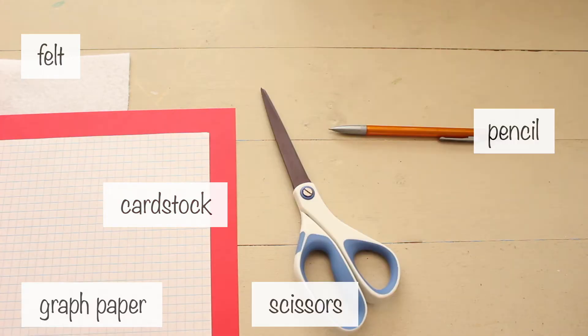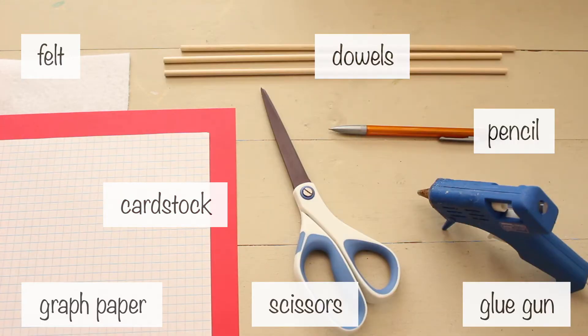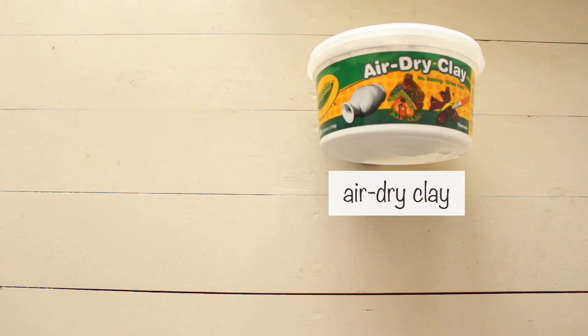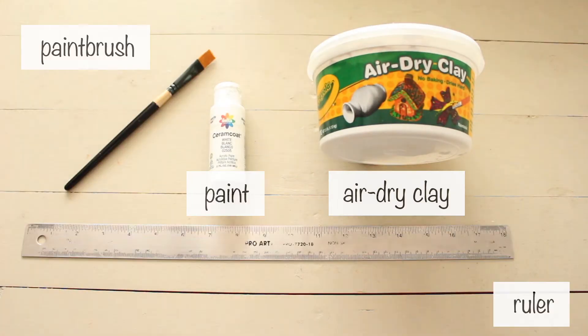For supplies, you'll need felt, cardstock, graph paper, pencil, scissors, glue gun, dowel, wood glue, air dry clay, paint, paintbrush, and a ruler.